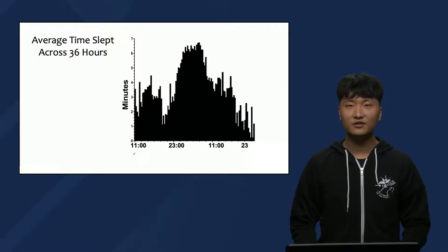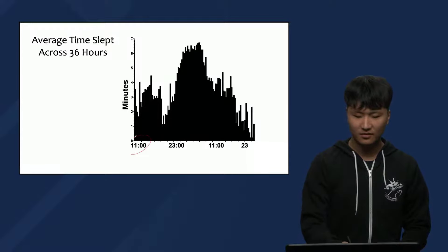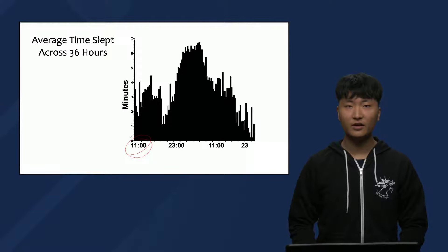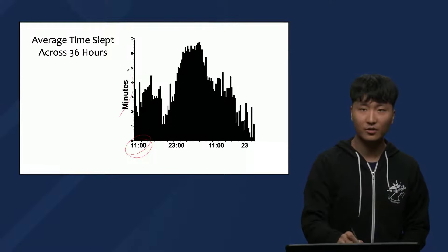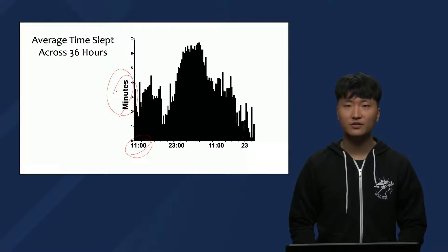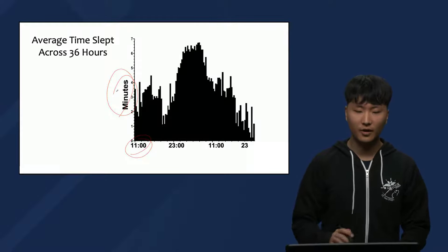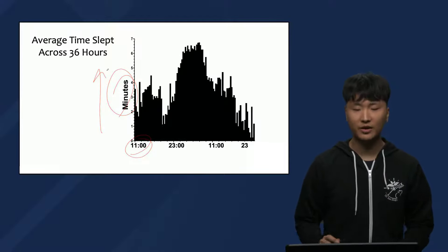The 36 hours of the study are shown on the x-axis, starting in the late morning, and the y-axis shows the number of minutes the participants went to sleep during each seven-minute sleep opportunity, on average. So the higher the bar, the more time the participants spent sleeping at that time.